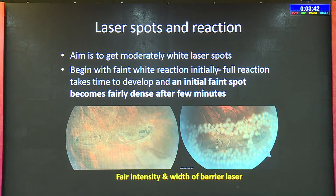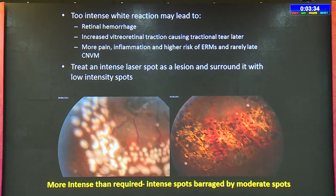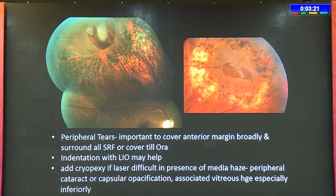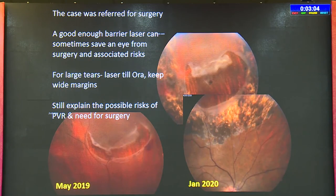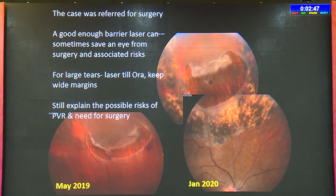Initial faint spots become fairly dense after a few minutes. Too intense a white reaction may lead to retinal hemorrhages, vitreous traction causing tractional tears later, more pain and inflammation, high risk of ERMs, and rarely late CNVM. Treat an intense laser spot as a lesion and surround it with low intensity spots. For peripheral tears it's important to cover the anterior margin broadly and surround all SRF; if not possible, cover the ora. Indentation with indirect laser may help. Add cryopexy if laser is difficult in the presence of media haze. A good barrier laser can sometimes save an eye from surgery.